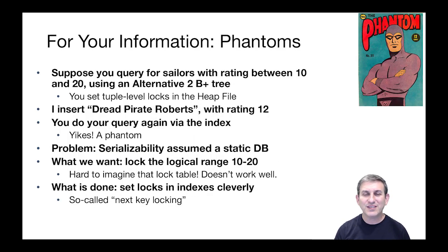Another scenario that's interesting to know about is called phantoms. Suppose that you're querying for sailors with a rating between 10 and 20 using an alternative 2 B+ tree. So you walk down this B+ tree to the bottom, you find a set of tuples in the database that satisfy this range query, and for each tuple, you get a shared lock before you go fetch it. So you've locked all the sailors with rating between 10 and 20. But your transaction is not done, so you're still holding your locks. Meanwhile, I come along and insert a new sailor record for the Dread Pirate Roberts, and he's got a rating of 12, which falls within your query range.